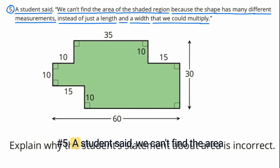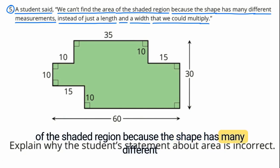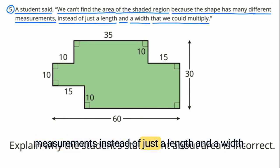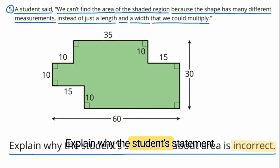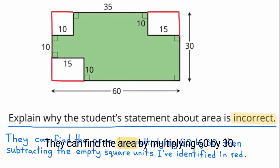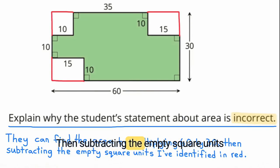Number 5. A student said, 'We can't find the area of the shaded region because the shape has many different measurements, instead of just a length and a width that we could multiply.' Explain why the student's statement about area is incorrect. They can find the area by multiplying 60 by 30, then subtracting the empty square units I have identified in red.